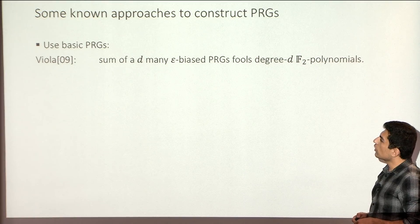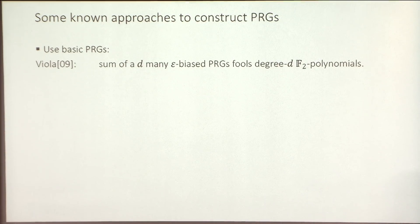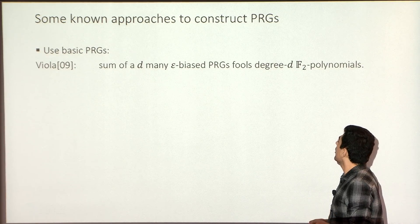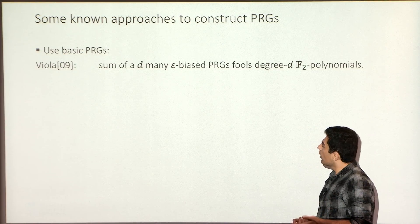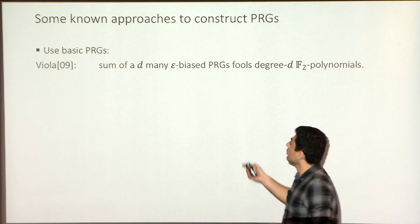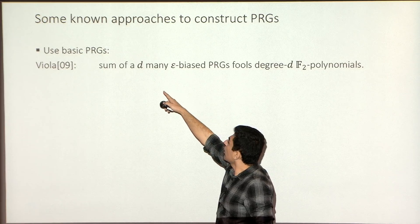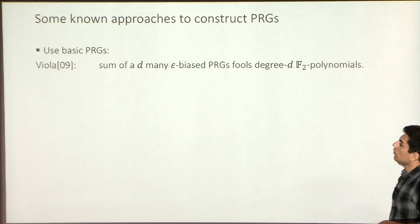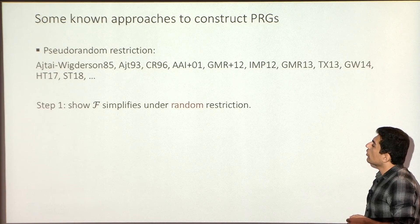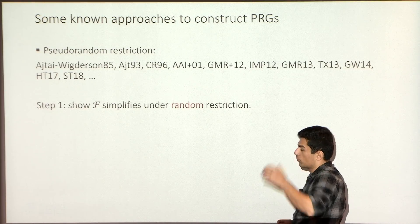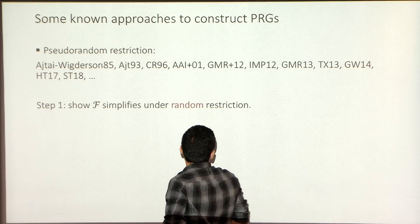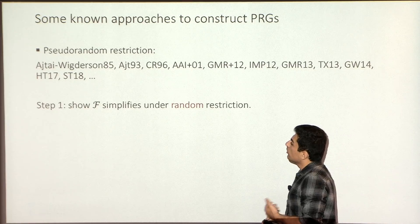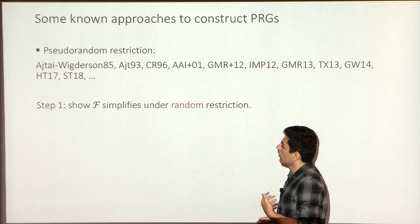Let me quickly describe some general approaches to construct pseudorandom generators. One idea is to take basic pseudorandom generators like epsilon-biased generators or k-wise independence and combine them to give PRGs for stronger classes. For example, Viola showed that if you add up d many epsilon-biased random variables, you can fool degree-d F_2 polynomials. Another approach is based on random restriction, which is closer to what I'll be describing, initiated by Ita and Wigderson. The idea: first, show that when you apply a random restriction to your function class, the function simplifies — you pick many variables randomly and assign ±1 values.